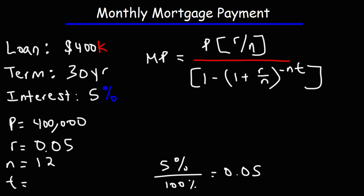T is basically the term of the loan in years. So this is a 30-year loan, or it has to be paid back in 30 years, so T is 30.